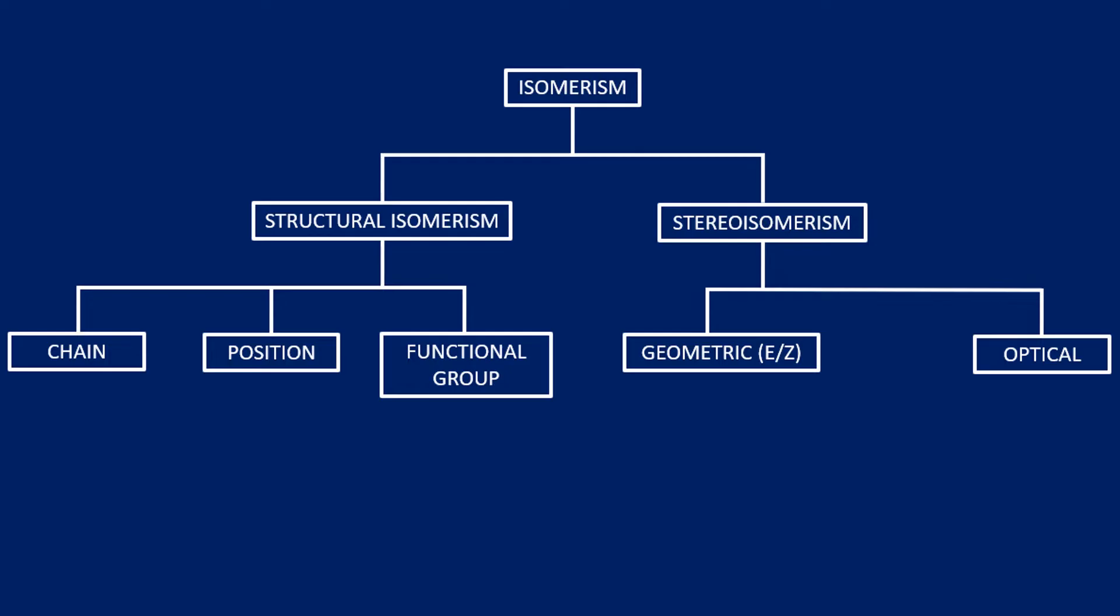So isomerism—there's actually two subgroups to isomerism: there's structural isomerism and stereoisomerism. There are other subgroups: three types of structural (chain, position, and functional group) and two types of stereoisomerism (geometric and optical). We're going to go through each one in turn, define them, and then look at some examples.